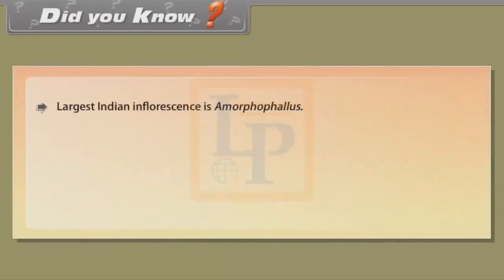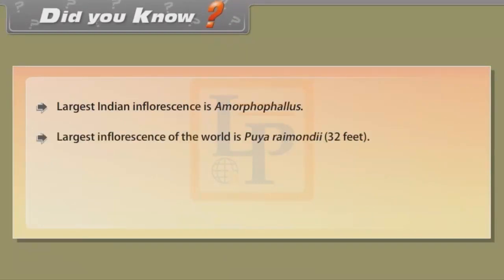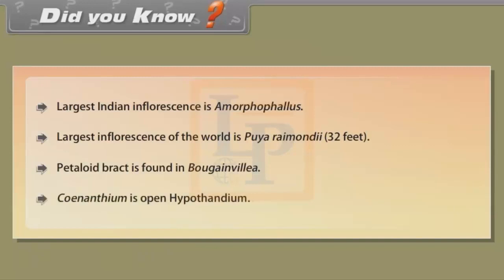Did you know: the largest Indian inflorescence is Amorphophallus. The largest inflorescence of the world is Puya raimondii at 32 feet. Petaloid bract is found in Bougainvillea. Synanthium is an open Hypanthodium.